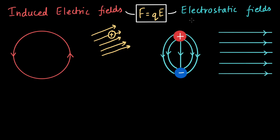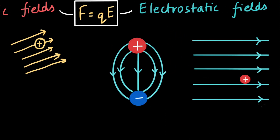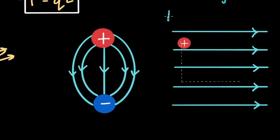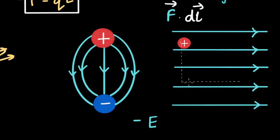Now let's think about the work done by both these fields. For an electrostatic field, take a unit positive charge and move it horizontally then vertically to a new point. For the horizontal path, the displacement is opposite to the electric field direction, so the field does negative work: minus E times L. For the vertical path, the angle between displacement and the field is 90 degrees, so by the dot product, cos 90 equals zero — no work is done there.